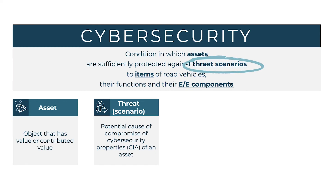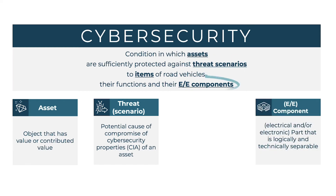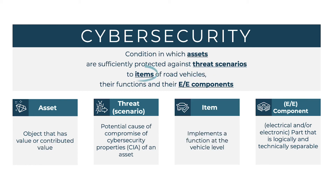Before talking about an item, we need to define a component. A component is an element that is logically and technically separable — in simple words, it can be a software or hardware element of a system. The main difference between a component and an item is that an item implements a function at the vehicle level; otherwise, it is only a component.